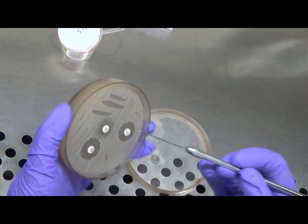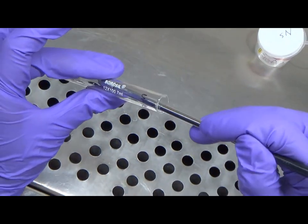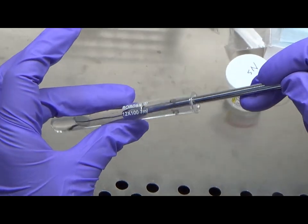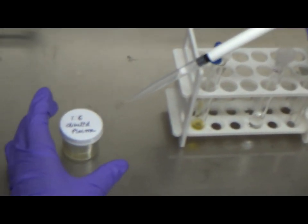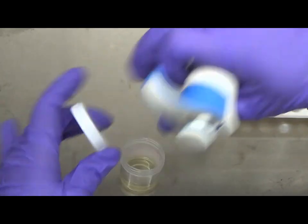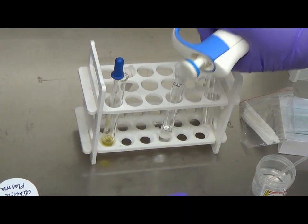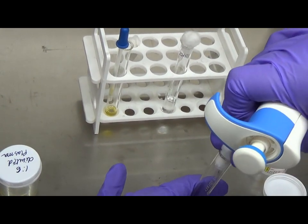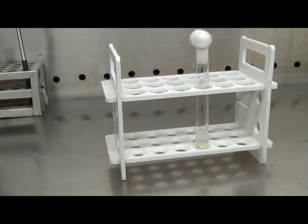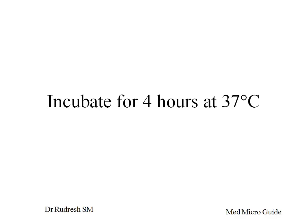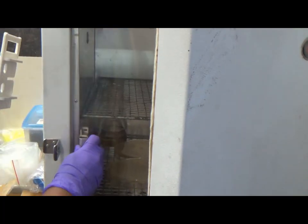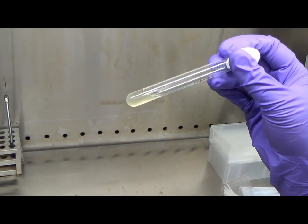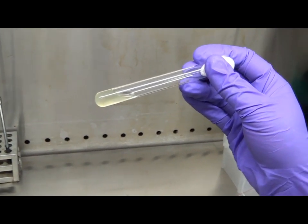Emulsify a small amount of colony in 0.5 ml of saline or 0.5 ml of plasma. If you are directly putting it into plasma, you can incubate the tube at this stage. Add 0.5 ml of diluted plasma to the 0.5 ml of inoculum made in sterile saline. The tube is now ready for incubation. Incubate the tube for 4 hours at 37 degrees Celsius. At 4 hours, look for the presence of a clot. The tube should be gently tilted to note the degree of clotting. Do not shake the tube, as it may disrupt the partially formed clot.